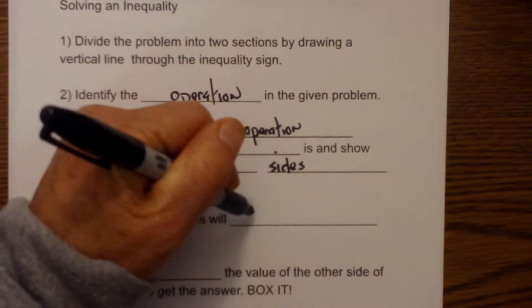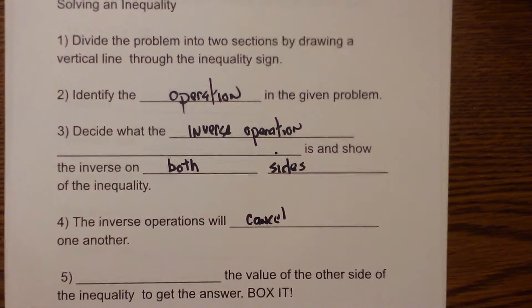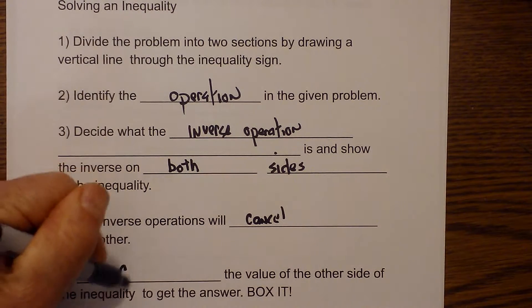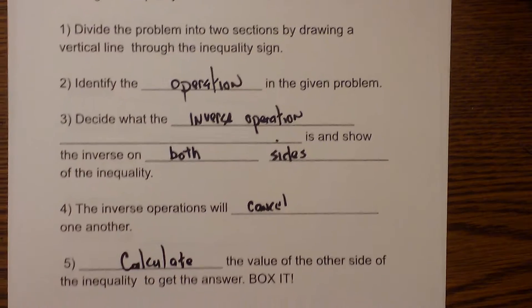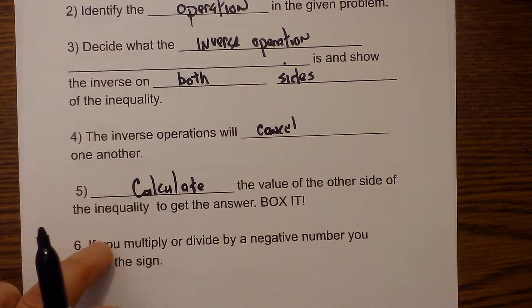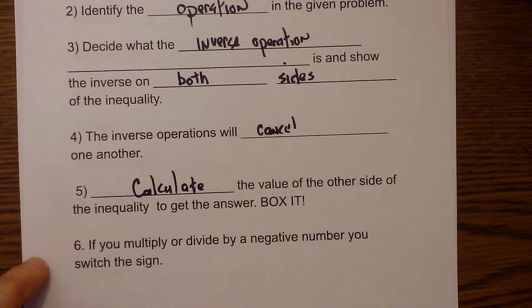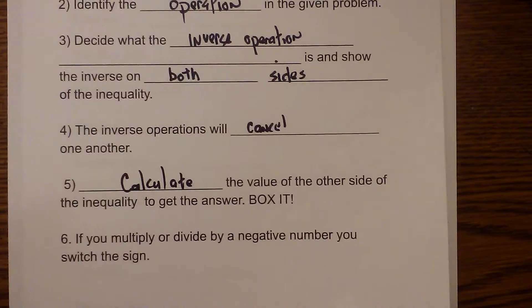The inverse operation will cancel one another. Next you calculate the value, then you box it, and finally you need to keep in mind if you multiply or divide by a negative number you switch the sign. So let's work a couple of example problems and put this into practice.